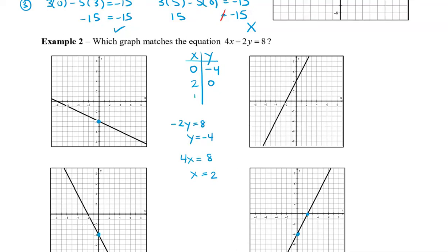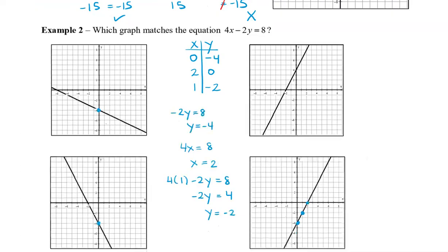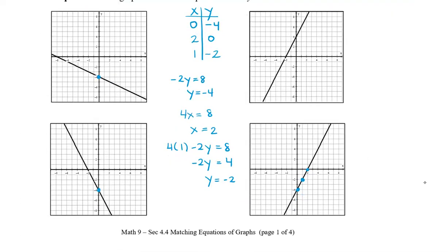Now just to maybe double check one more point, let's plug in x is 1. So we're going to get 4 times 1 minus 2y equals 8. So 4 times 1 is 4. So we're going to get negative 2y. We're going to subtract 4 from both sides. So we get 4 on the right side. Divide both sides by negative 2. And y equals negative 2. So we get the point 1, negative 2. And indeed we get 1, negative 2, which is this point here in the middle. So which graph matches the equation? Well, that would be this one down here on the bottom.